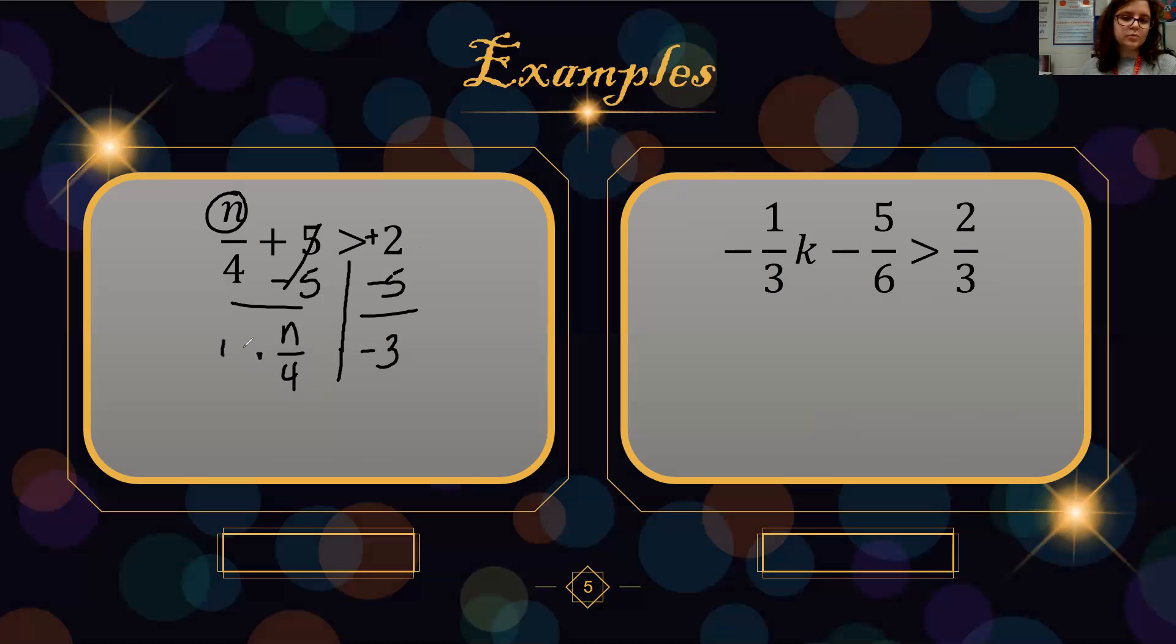I undo division with multiplication. Negative 3 times 4 is negative 12. My 4 that I'm multiplying by is not negative, so my greater than does not change.